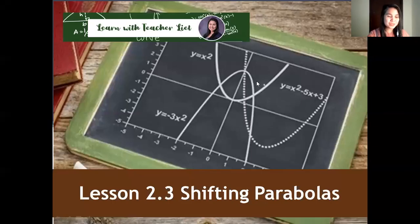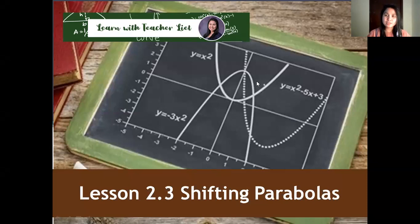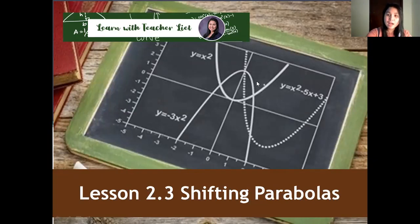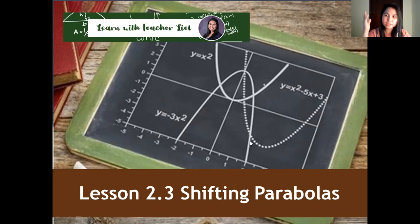Good morning and welcome to our class. We are now in lesson 2.3, and we have two more lessons before chapter two ends. Lesson 2.3 is about shifting parabolas. We know that in lesson 2.2 we discussed that a quadratic function can be graphed, and its graph is called a parabola. The parabola can either open upwards or downwards, and in this lesson we'll be shifting parabolas — left, right, up, down, narrower, and wider.